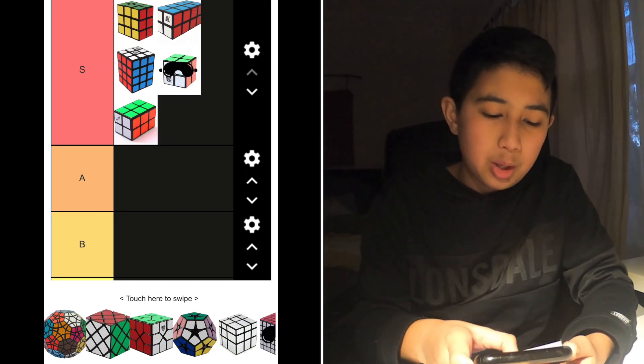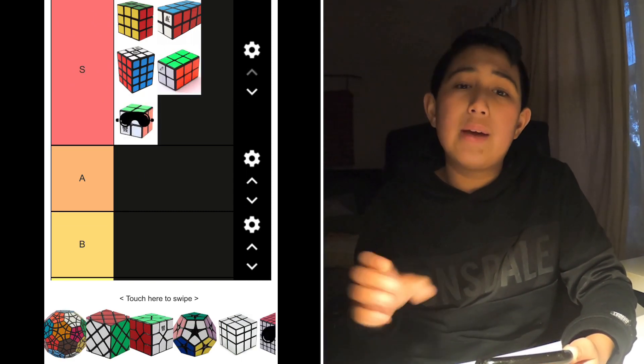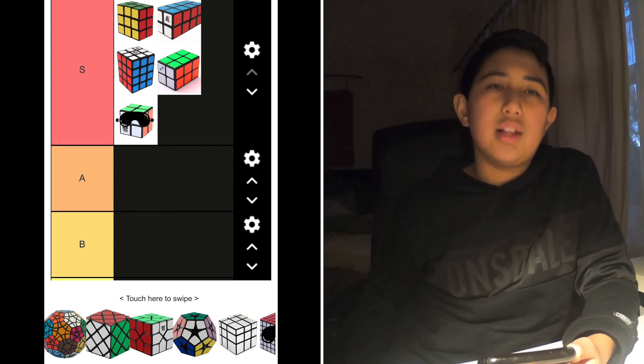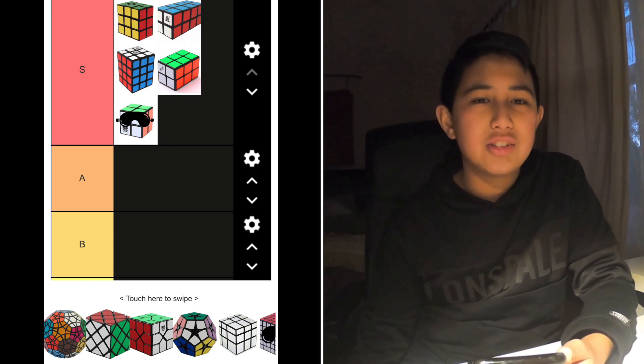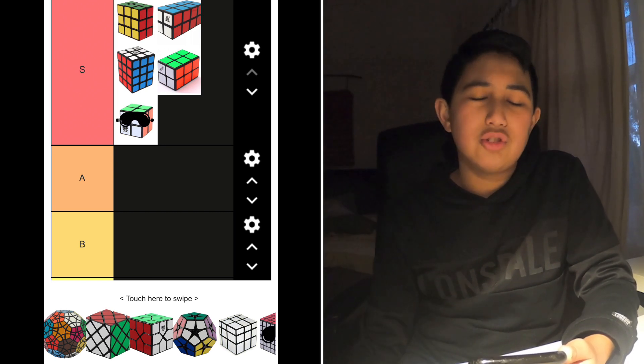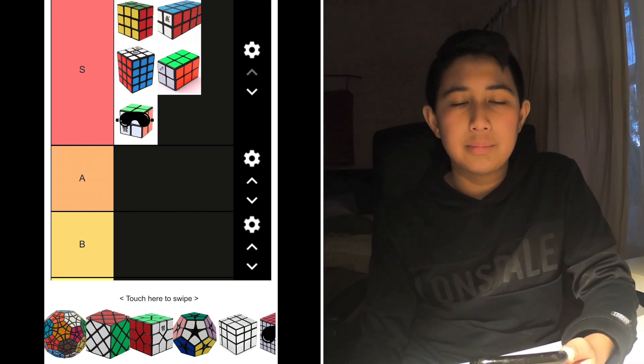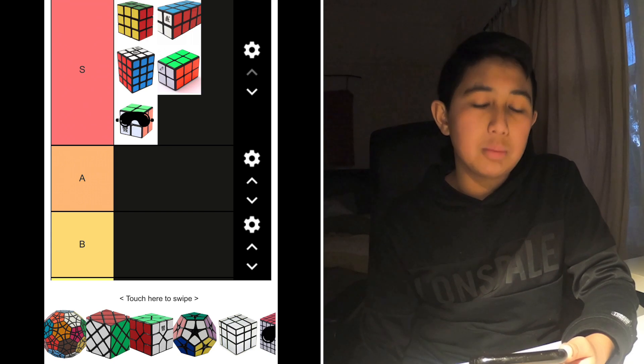2 blind gets S tier as well because it's really easy to learn and that's actually a really defining factor of which events should be added. Like, would people want to learn 2 blind? It's actually not that hard and it actually looks really impressive.